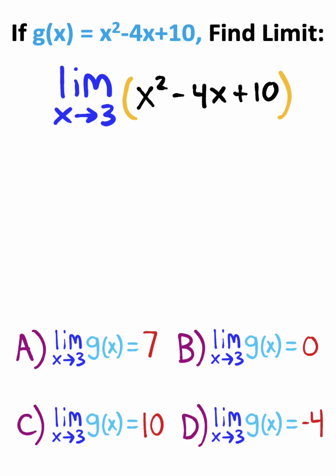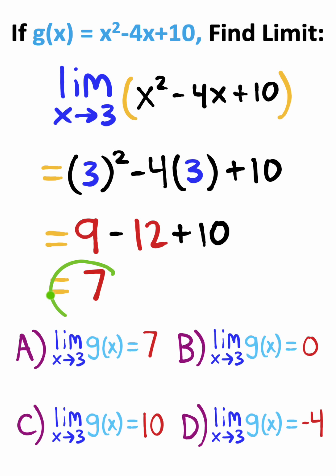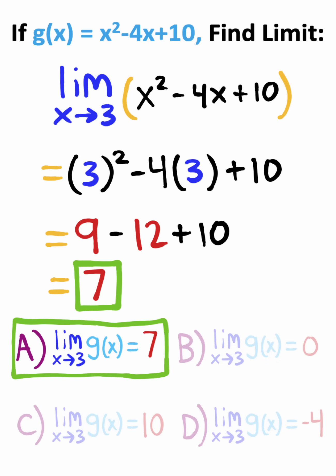For our next question, we're asked to find the limit of this function, and notice we're dealing with a polynomial. So what that means is I can just take my 3 here and plug it in for every place that I see x. Now if I go ahead and work out the math, we end up getting 7, meaning the solution to this problem is option A.